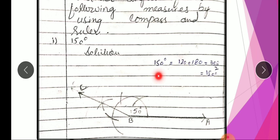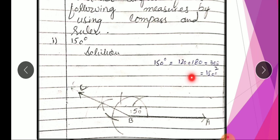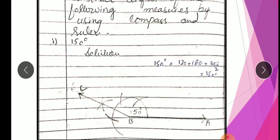Aap humne 150 degree ka angle banana hai. Toh us ke liye aap dekhen: hamare paas division hui hai — 120 plus 180. In dono ka agar plus karen toh 300 aata hai. 300 ka half 150 degree. Yani ke 120 aur 180 degree — jo aapke paas hain — inhe agar hum bisect karen, toh 120 degree aur 180 degree ke mid mein hamaara angle aayega. Yani ke in dono ko bisect karna hai. Yeh jo 180 ka angle ban raha hai aur 120 ka angle ban raha hai, in dono angles ka bisection kya hai? 150 degree.